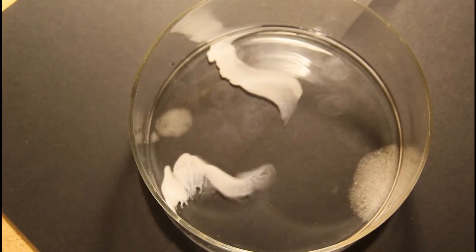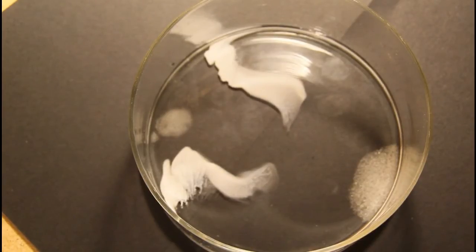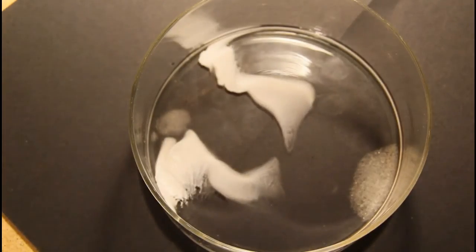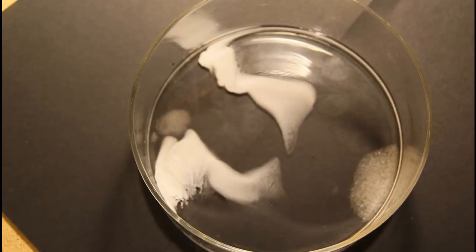And so what happens is the silver ions are coming into contact with the chloride ions and silver chloride is precipitating out. You can see it's forming a precipitate. And that's a precipitation reaction.